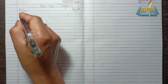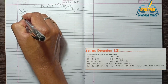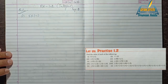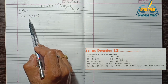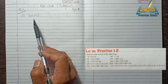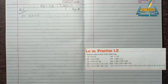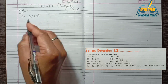So the first question is 5 into minus 1. Here, 5 is a positive integer and minus 1 is a negative integer. Just like whole numbers, when we multiply 5 with 1 the product is 5, since 5 times 1 equals 5.